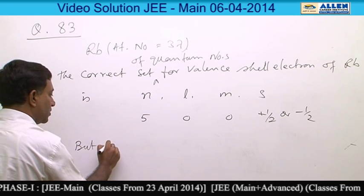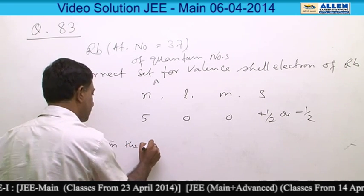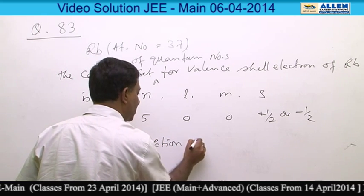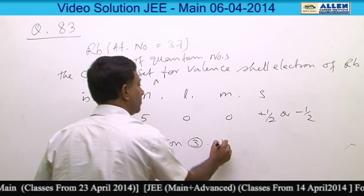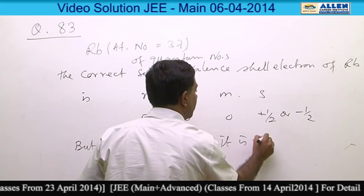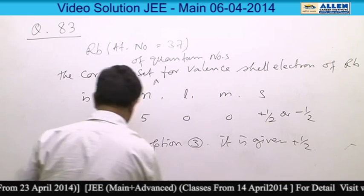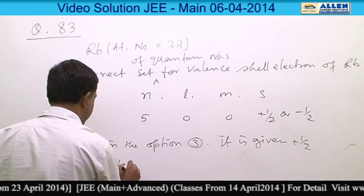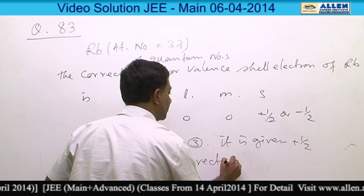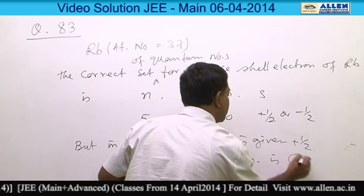In option 3, the spin quantum number is given as +1/2. Hence, the correct answer is option 3.